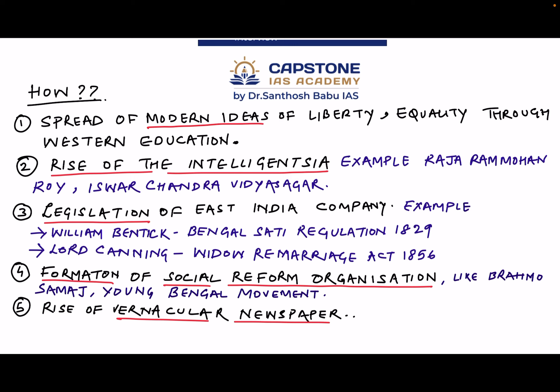Point four: the formation of social reform organizations, like the Brahmo Sabha belonging to Raja Ram Mohan Roy, and the Young Bengal Movement started by Henry Vivian Derozio. These social reform organizations were very vocal and supported women's education, women's rights, and women's rights to property. Point five: the rise of the vernacular newspaper, which helped spread the idea of women's reform and highlighted the atrocities that women all over India were subjected to.